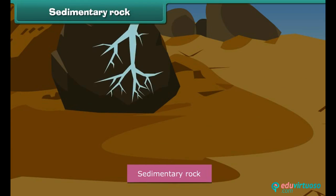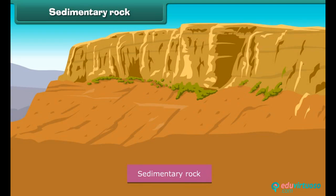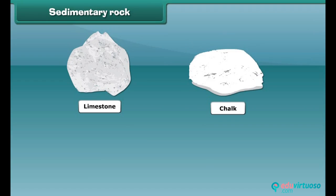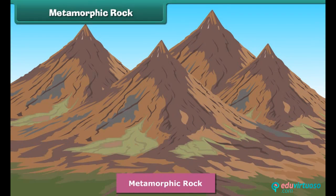Now let's discuss sedimentary rock. Water and air break igneous rocks into smaller rocks, and consequently soil is formed. These pieces settle into layers, then these layers get compressed and hardened, and finally become sedimentary rock. Sedimentary rock is usually soft to touch. Limestone, chalk, and coal are examples of sedimentary rocks.